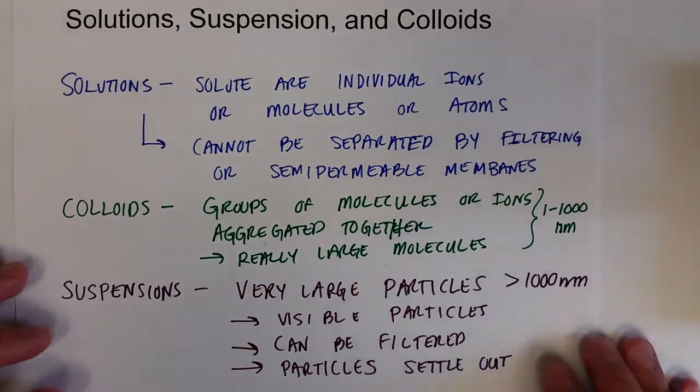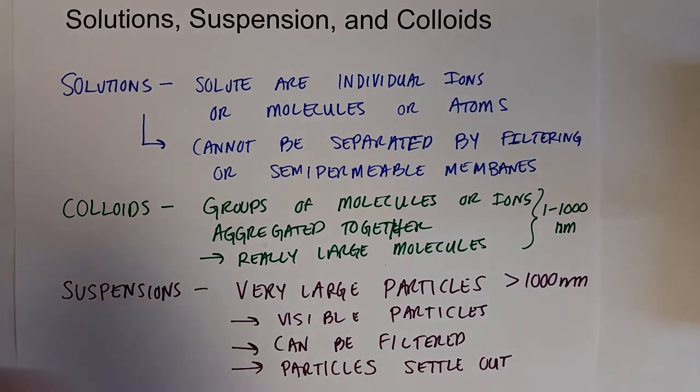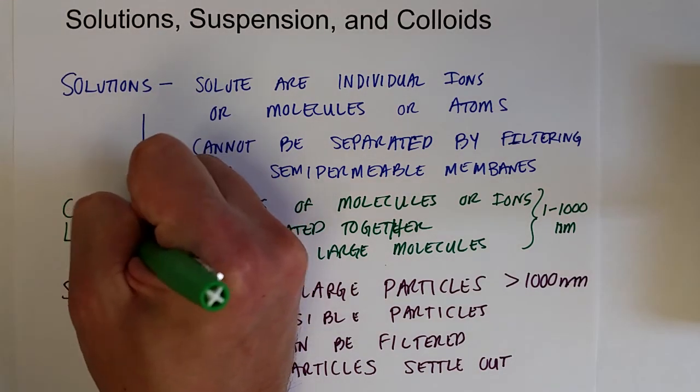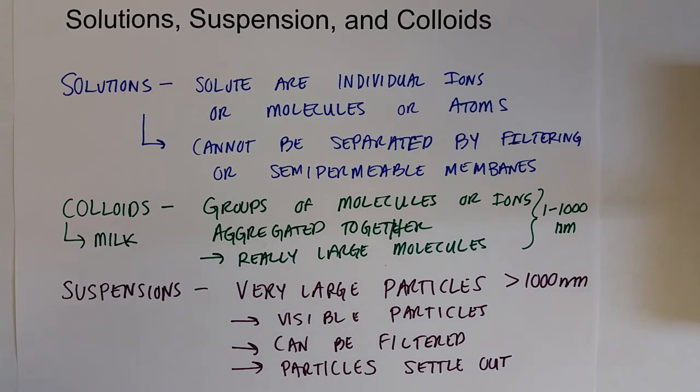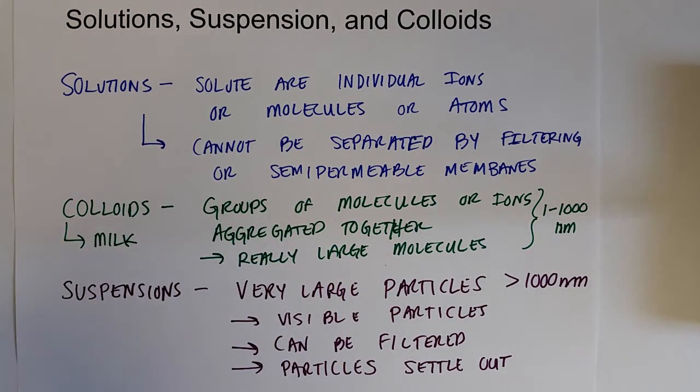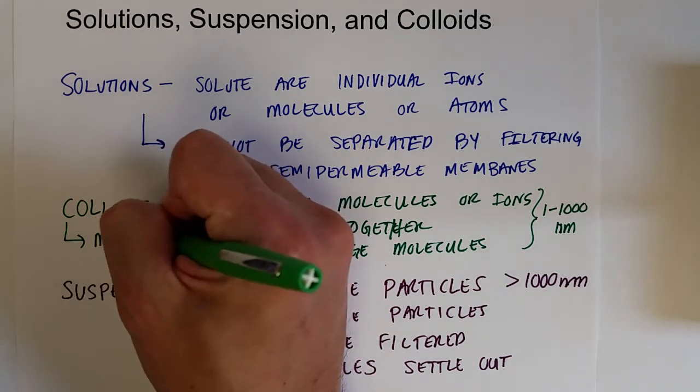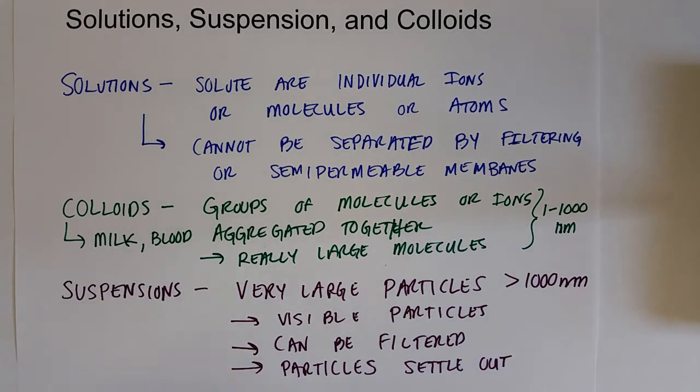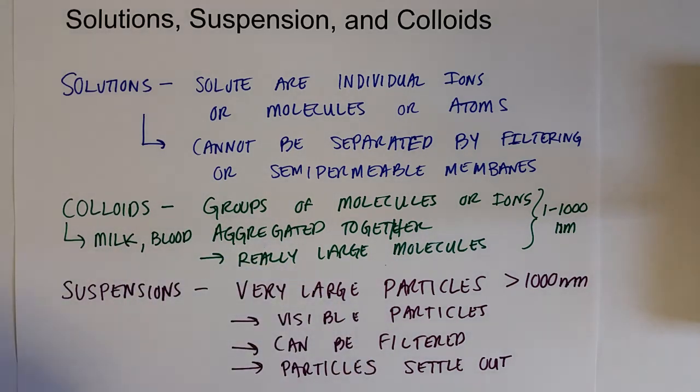Some examples of colloids would be milk. Milk is a perfect example, which is large fat particles, large groups of fat molecules in aqueous solution. Your blood is a colloid. And you can leave milk in the fridge or sitting out and the fat molecules never settle out.